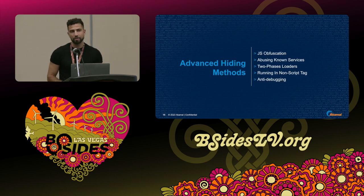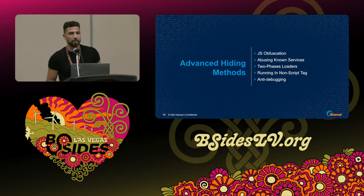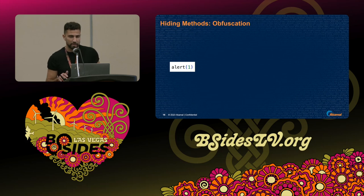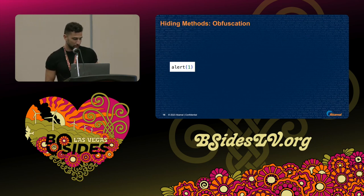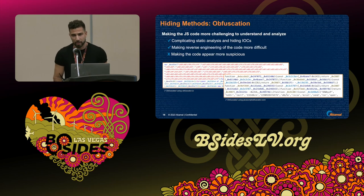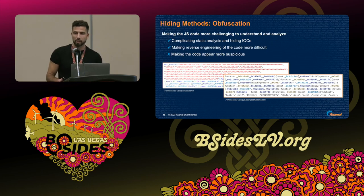Now let's talk about the main focus point of this talk — the advanced attack methods. Some of the methods we'll show are relevant for any kind of JavaScript injection, not only Magecart, but we'll focus on the Magecart perspective. Let me start with hiding methods. Hiding methods refer to anything attackers do to implement the attack in a more silent way — giving it a more legitimate sense, complicating reverse engineering of the malicious code, and helping evade static scanners.